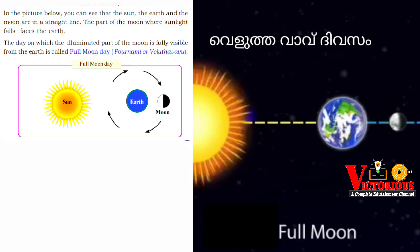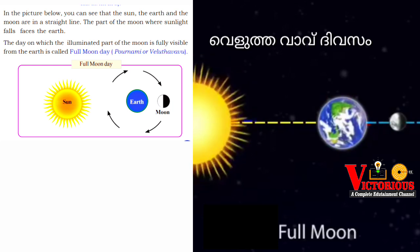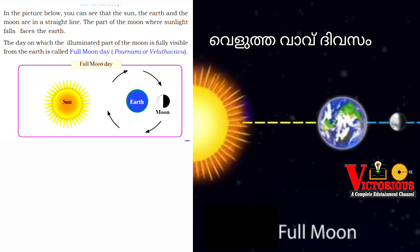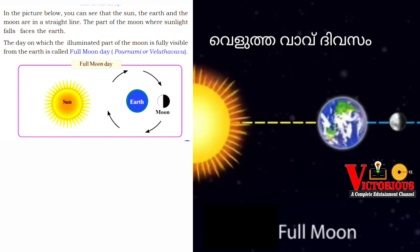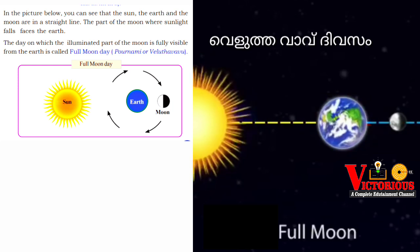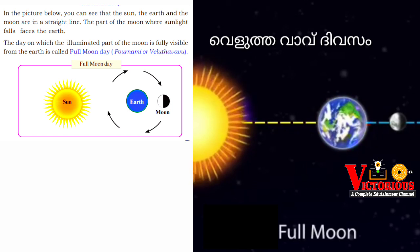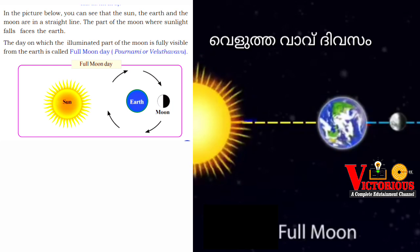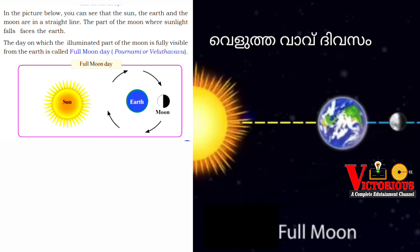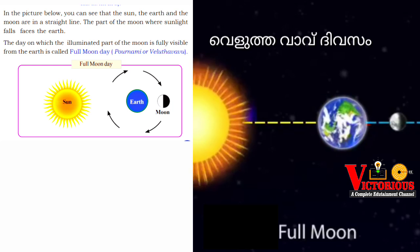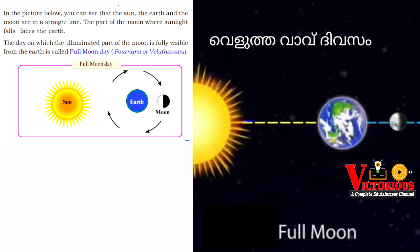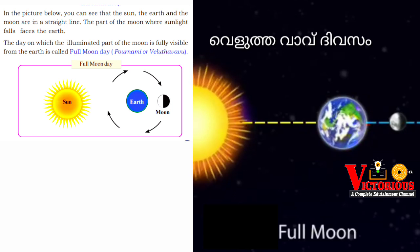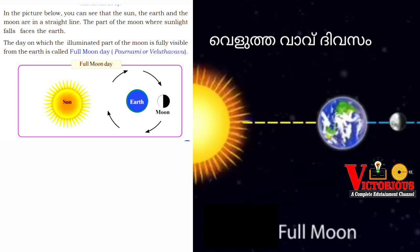In the picture below, we can see that the sun, the earth, and the moon are in a straight line. The part of the moon where sunlight falls faces the earth. The day on which the illuminated part of the moon is fully visible from the earth is called full moon day, or Pournami, or Velutthavav.